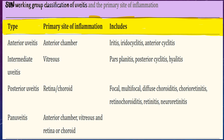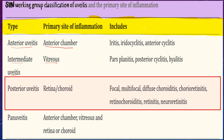The SUN working group classification of uveitis is based on the primary site of inflammation. When the primary site of inflammation is in the anterior chamber, we have anterior uveitis. When it is in the vitreous, it is called intermediate uveitis. When the primary site is in the retina or choroid, that is posterior uveitis. In pan-uveitis, the inflammation involves the anterior chamber, vitreous, and also the retina and choroid.